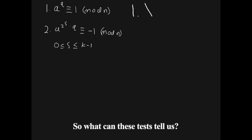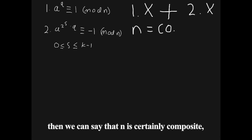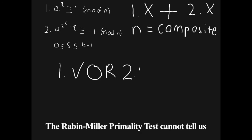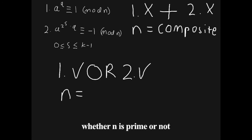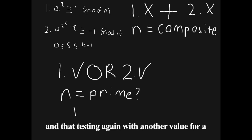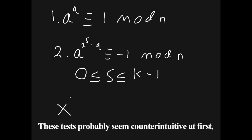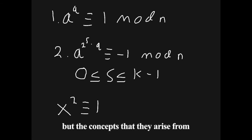So what can these tests tell us? If n and base a fail both of the two tests, then we can say that n is certainly composite, and we can stop all further testing. However, if n and base a pass either test, the Rabin-Miller primality test cannot tell us whether n is prime or not, only that it is probably prime, and that testing again with another value for a will increase that probability. These tests probably seem counterintuitive at first, but the concepts that they arise from are really very simple.